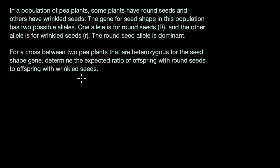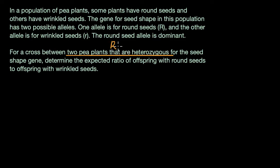Now let's think about the genotype for the two pea plants that are heterozygous. Heterozygous means they have two different versions of the gene, or two different alleles. So these are going to be two pea plants that are capital R, lowercase r — they have one of each. And to see what happens in a cross between them, I will draw a Punnett square.